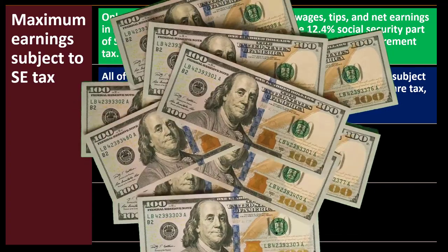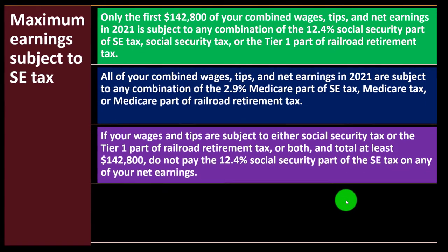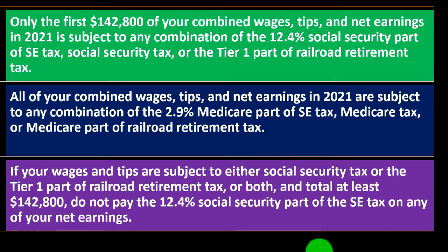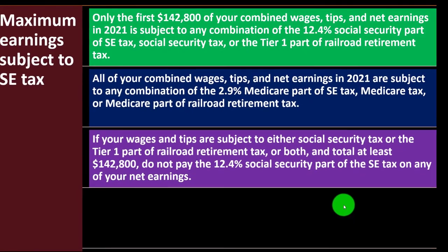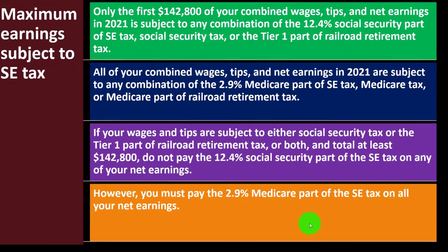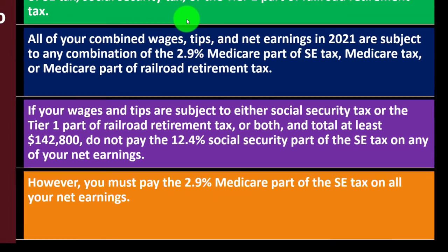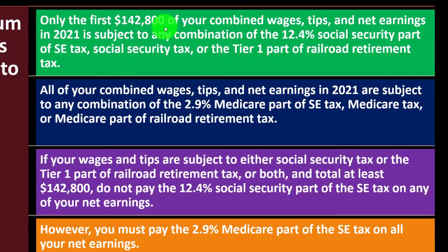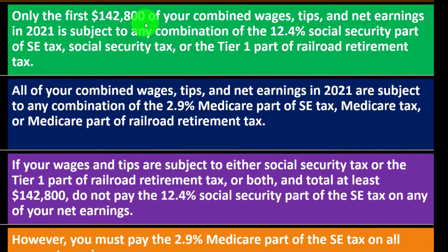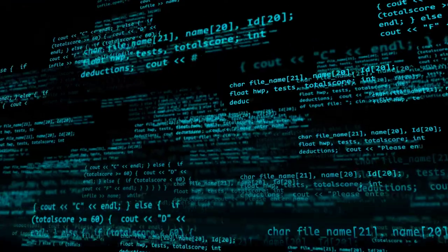All of your combined wages, tips, and net earnings in 2021 are subject to the 2.9% Medicare part with no cap. So if you made $200,000, you'd still pay the 2.9% Medicare even above the $142,800 Social Security cap. Also note this gets confusing if you have multiple Schedule Cs for the same person, or if you have W-2 income subject to Social Security — now you have a combined cap problem, which gets more complex. Software helps a lot.